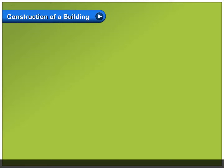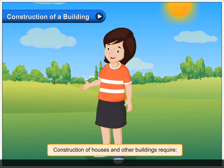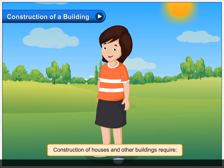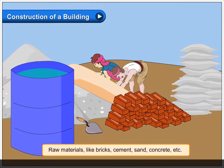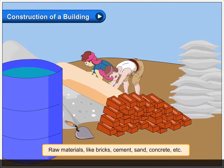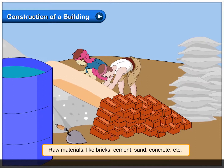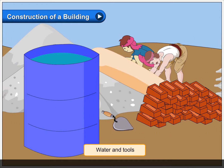Construction of a building requires proper planning. Construction of houses and other buildings require raw materials like bricks, cement, sand, concrete, etc., water and tools.